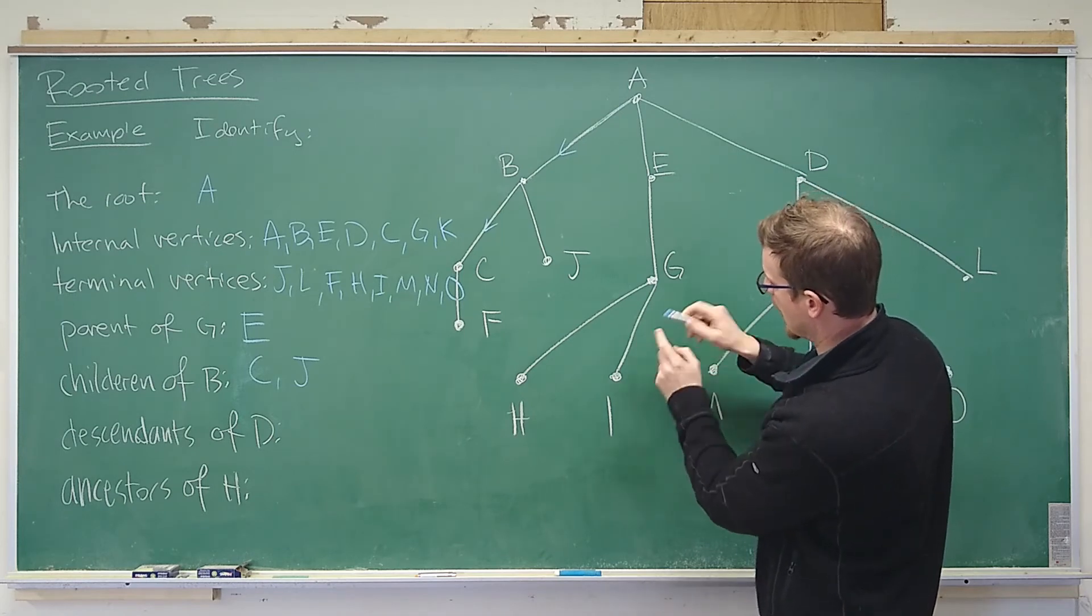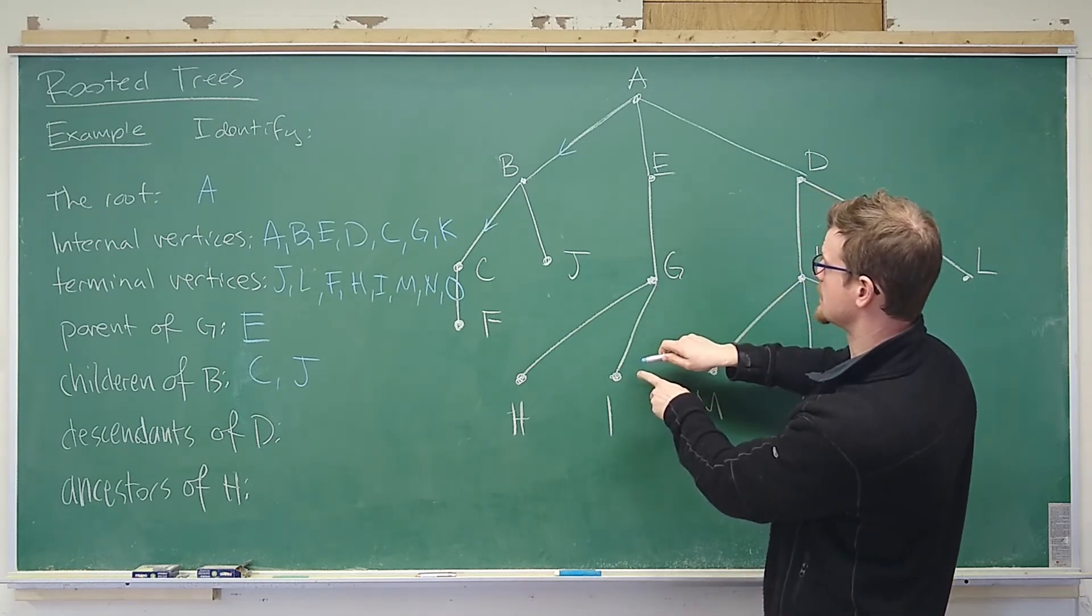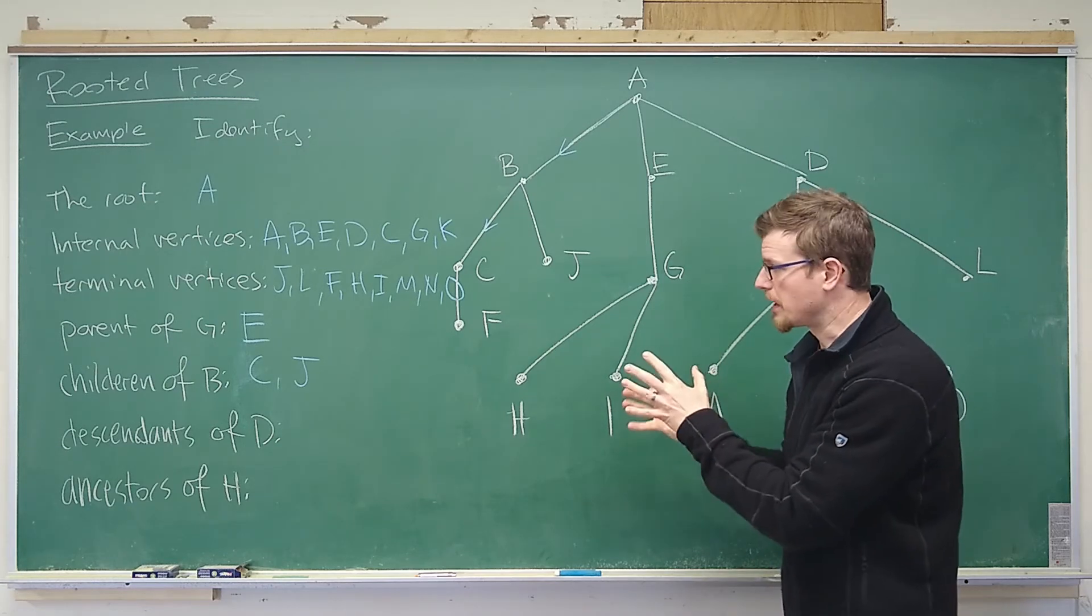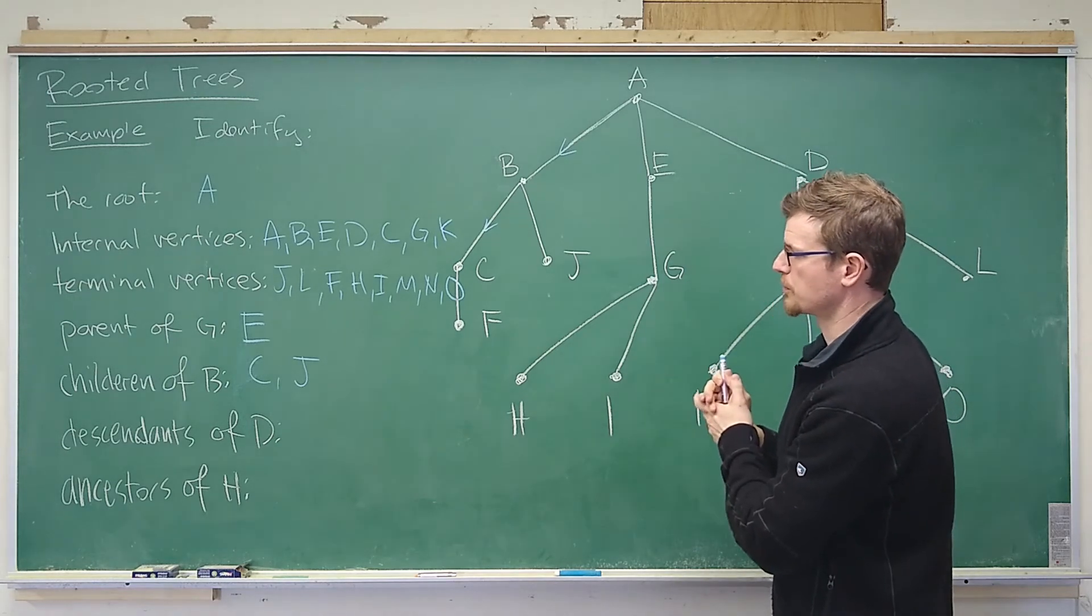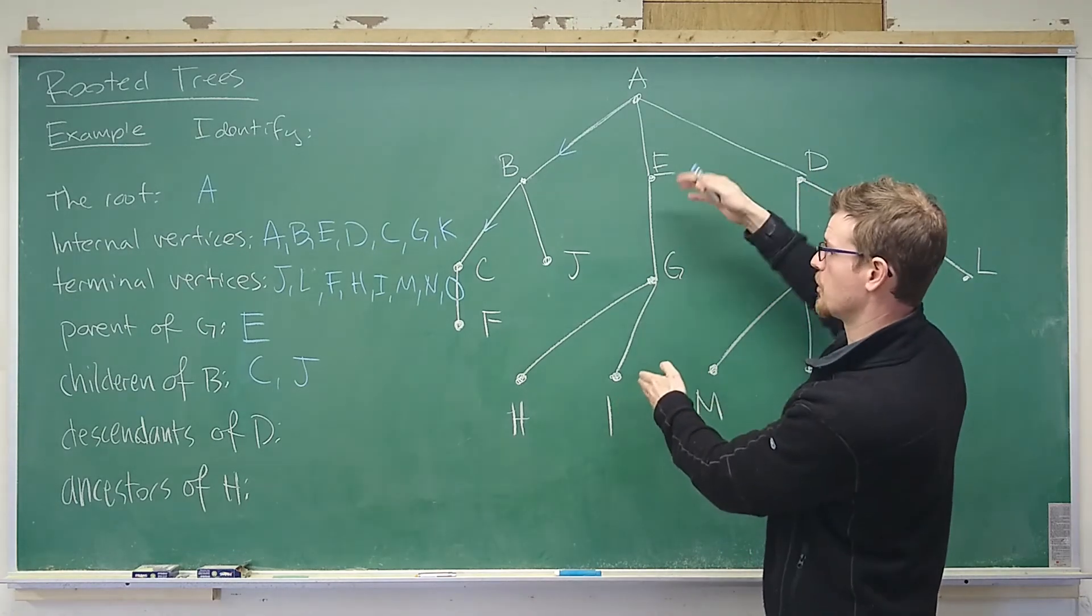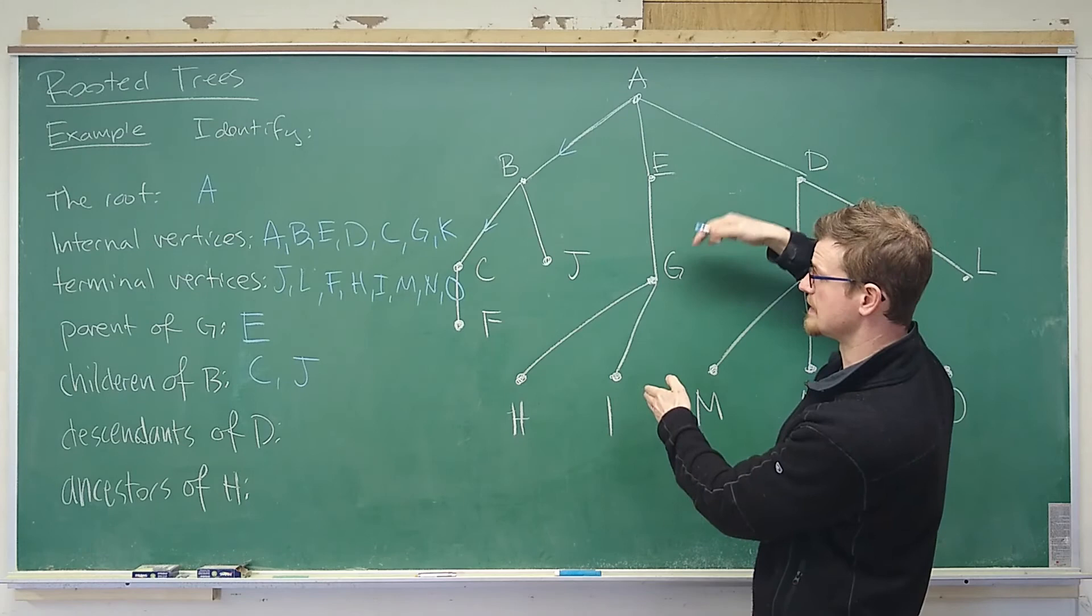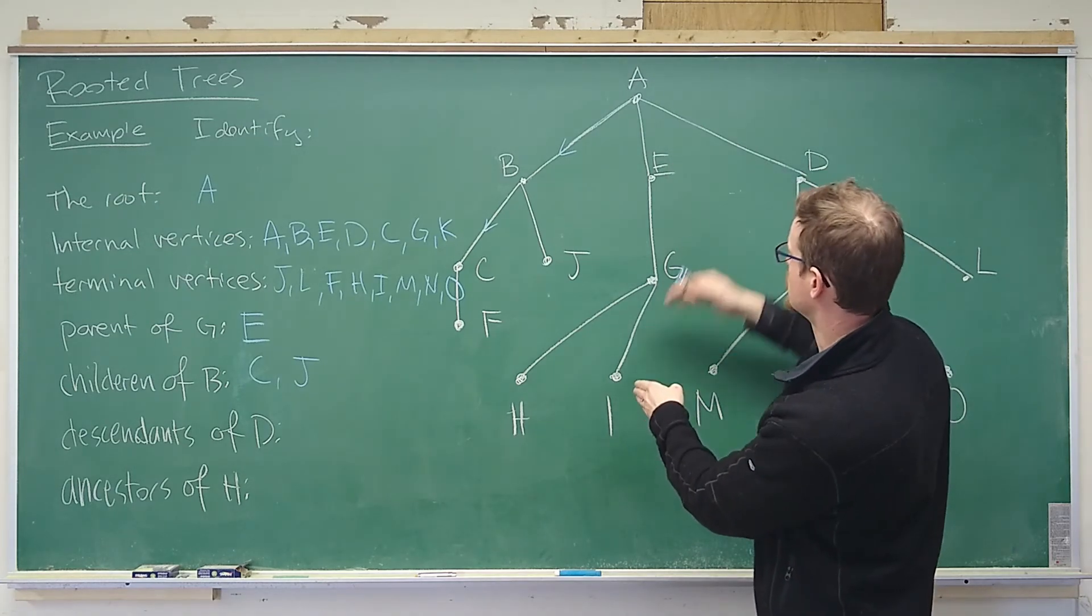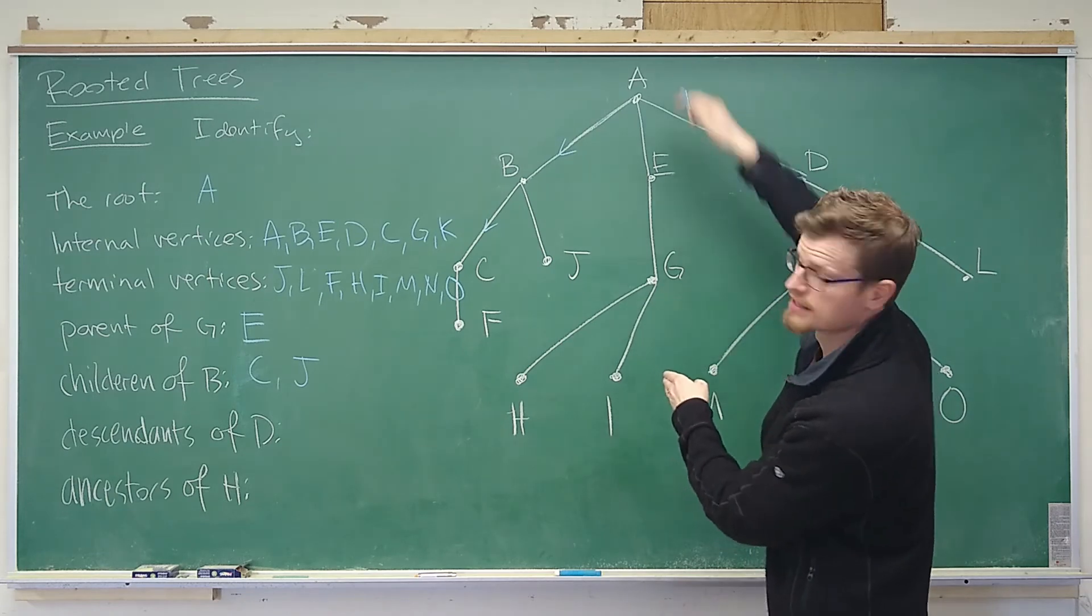And i is said to be a descendant of each of those vertices. So that's how we've been working with what the definition of the descendant is. Focusing on one vertex and saying who it is a descendant of. Okay. i is a descendant of g. i is a descendant of e. i is a descendant of a.